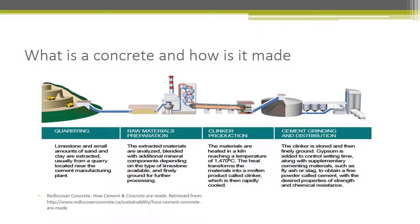Starting with the quarrying of the material, limestone and a small amount of sand and clay are extracted, usually from a nearby location to the plant. The raw material is then prepared. Those materials are blended with additional components depending on the type of limestone and fine ground for further processing. After that, the process goes to the clinker production. The material is heated, reaching a temperature of 1470 degrees Celsius, transforming the material into a molten product called clinker, which is rapidly cooled.